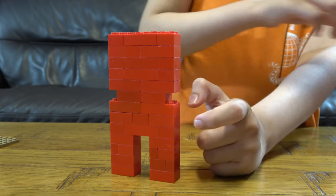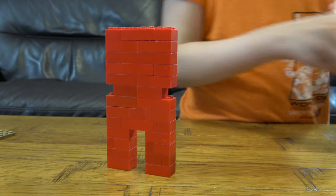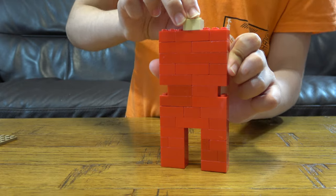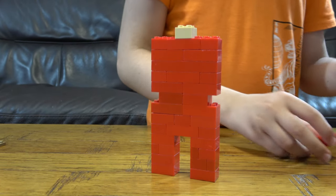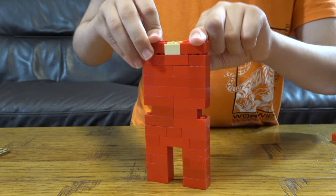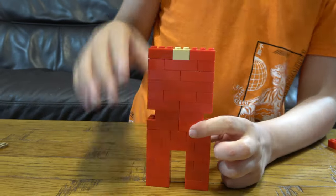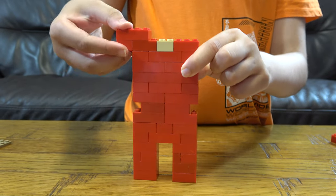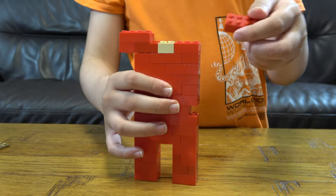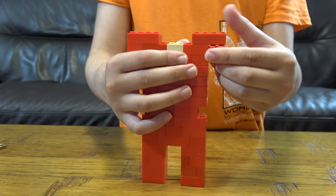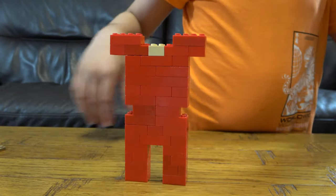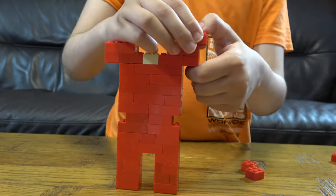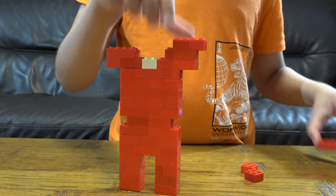Next we get these two, put them there. Get two of these, place that there and put this here. This underneath, this here, this underneath, place this here.